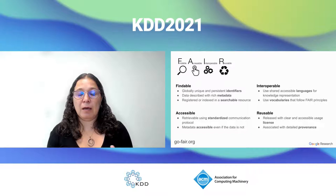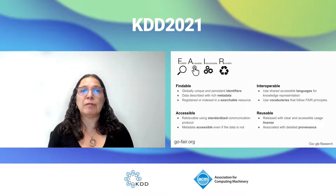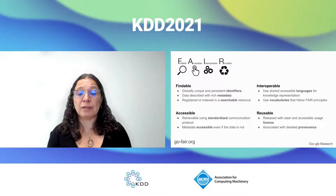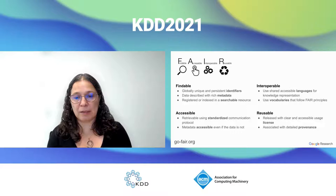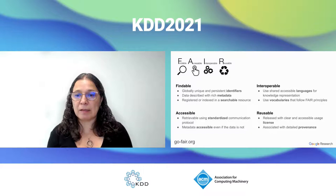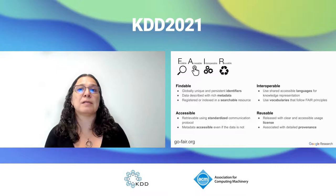Interoperable data relies on standards — there are many knowledge representation standards, often organized by scientific discipline. Standards cover formats, languages, vocabularies, and ontologies used to describe the data. Using either community standards or formal standards for these knowledge representations, and making sure those ontologies and vocabularies themselves follow FAIR principles, makes data much more interoperable.